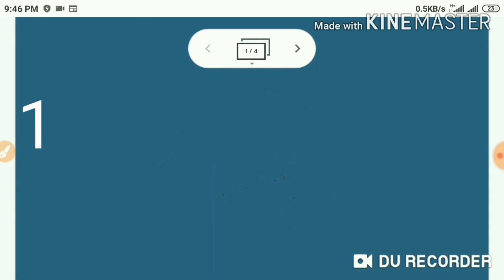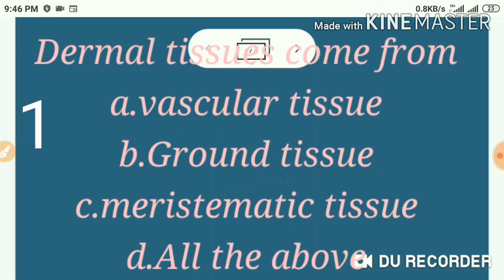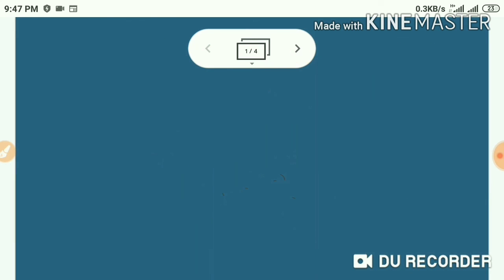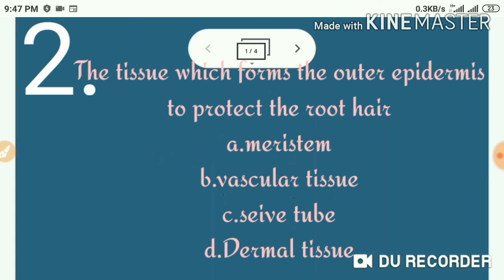One question can be, Dermal tissues come from? Options: A. Vascular tissue. B. Ground tissue. C. Meristematic tissue. D. All the above. The answer would be meristematic tissue. Second question, the tissue which forms the outermost epidermis to protect the root hair. Options: Meristem. Vascular tissues. Sieve tubes. Dermal tissues. The answer is dermal tissues.